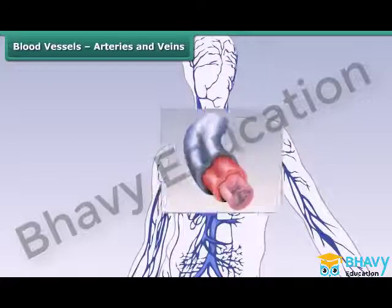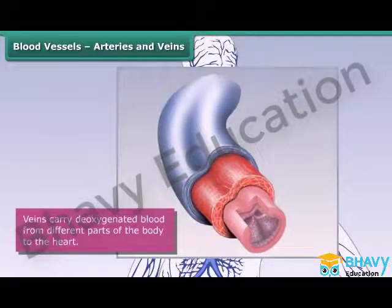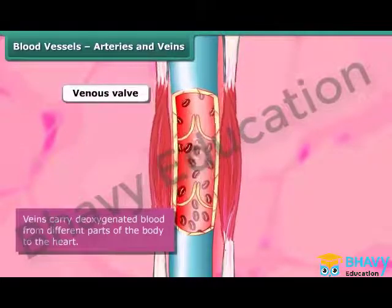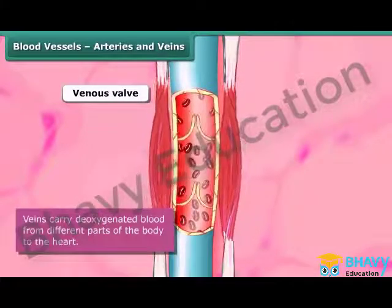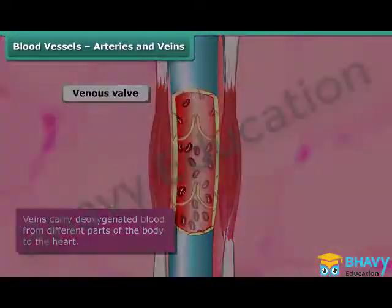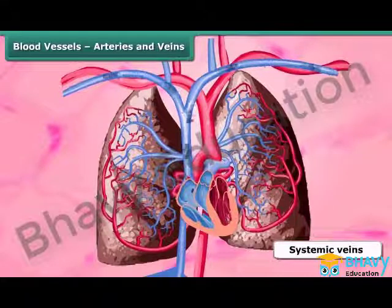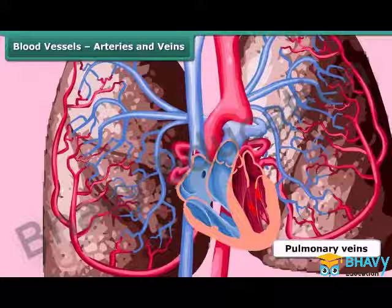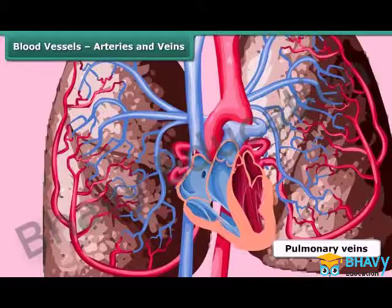Veins are blood vessels with thin walls, close to the skin. They carry deoxygenated blood from different parts of the body to the heart. Most veins have flaps known as venous valves that ensure blood flows only towards the heart, preventing backflow. The pressure of blood in veins is lower than in arteries. Veins are of two types: systemic veins, which carry deoxygenated blood to the heart, and pulmonary veins, which carry oxygenated blood from the lungs to the heart.